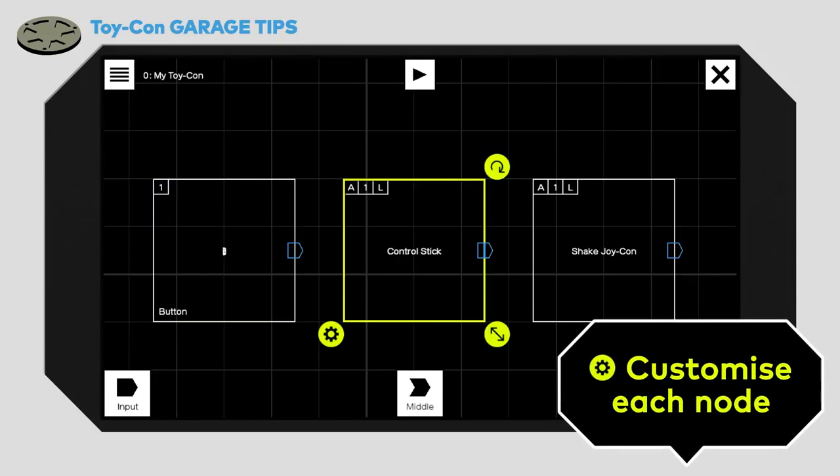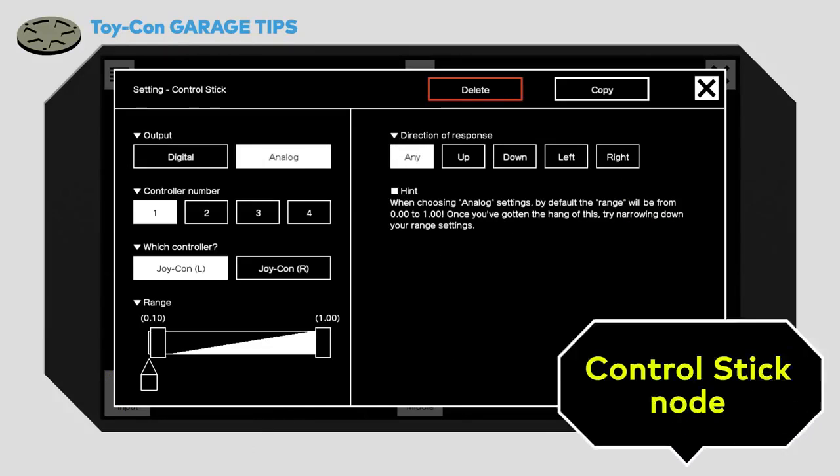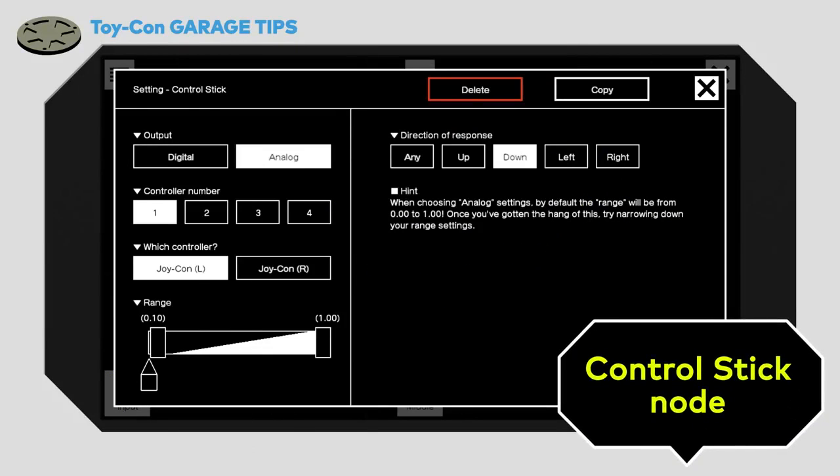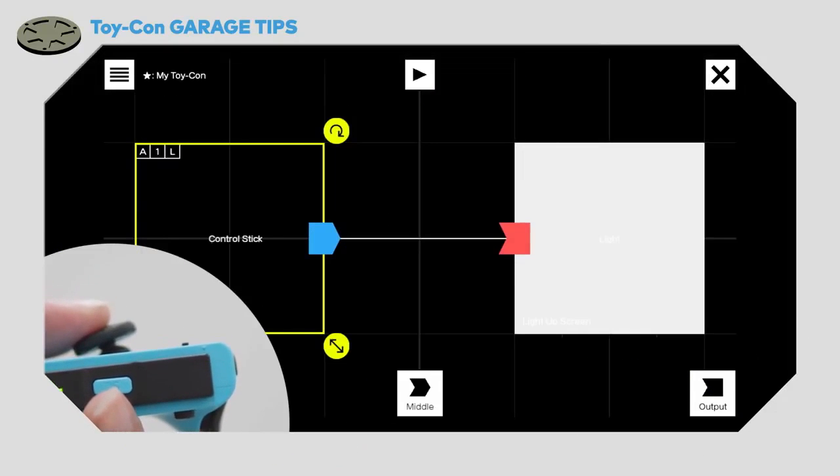There are lots of different types of nodes, and you can change the settings of each node too. The button node lets you select which buttons to use as your input. And the control stick node lets you choose which direction to push the stick to get a reaction.